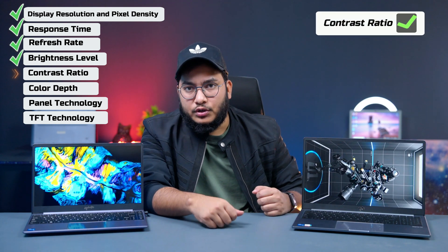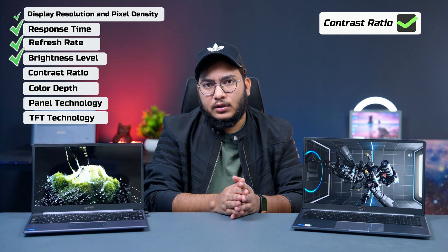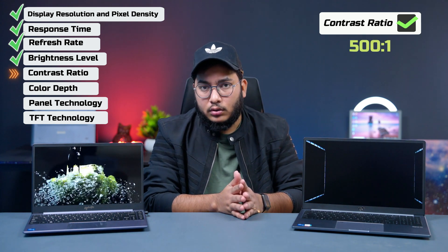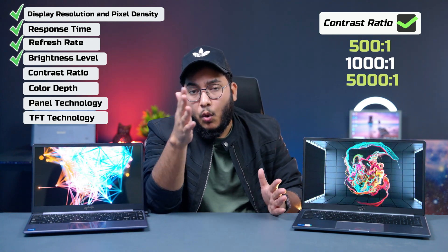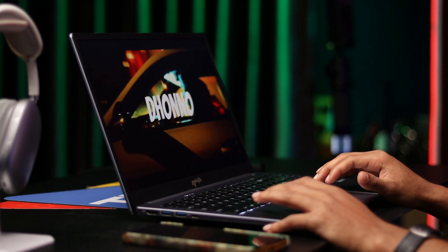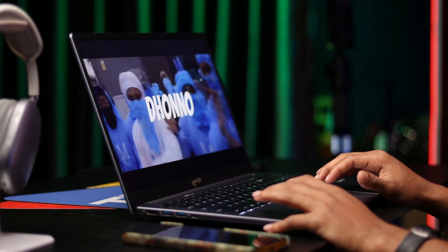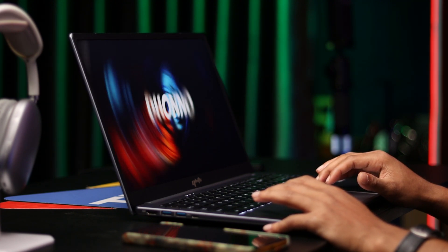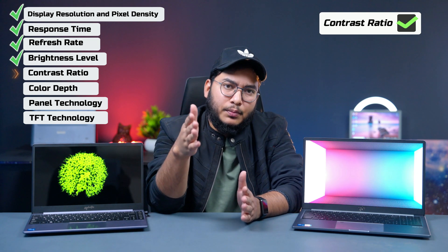This is contrast ratio, which is very important. The contrast ratio can be 500:1, 1000:1, or 5000:1. This refers to the difference between the black level and white level of the display. The higher the contrast ratio, the deeper the black level, the more natural the color reproduction, and the better the visual quality of video.